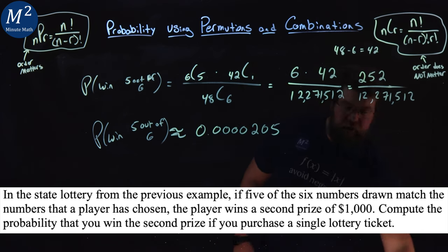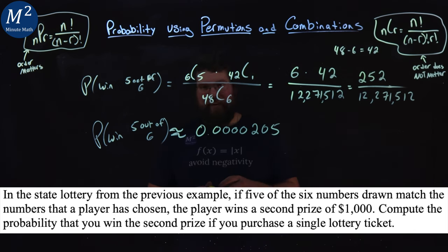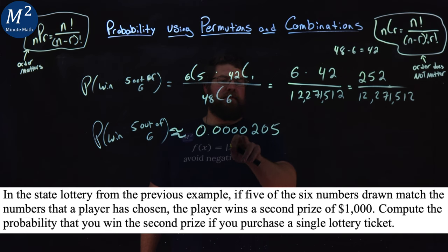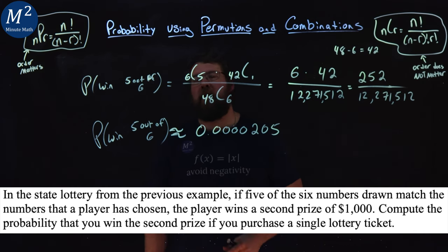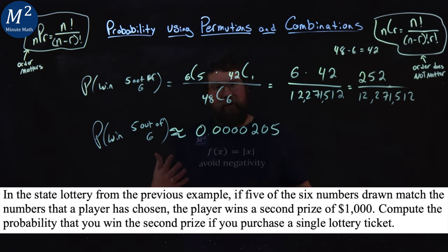So a low chance, but a better chance than getting all the numbers correctly. $1,000 for this second prize. We have 0.0000205 or 252 over 12,271,512. Hope you learned something new about probability with the lottery and getting five out of six. And as always, thanks for watching.